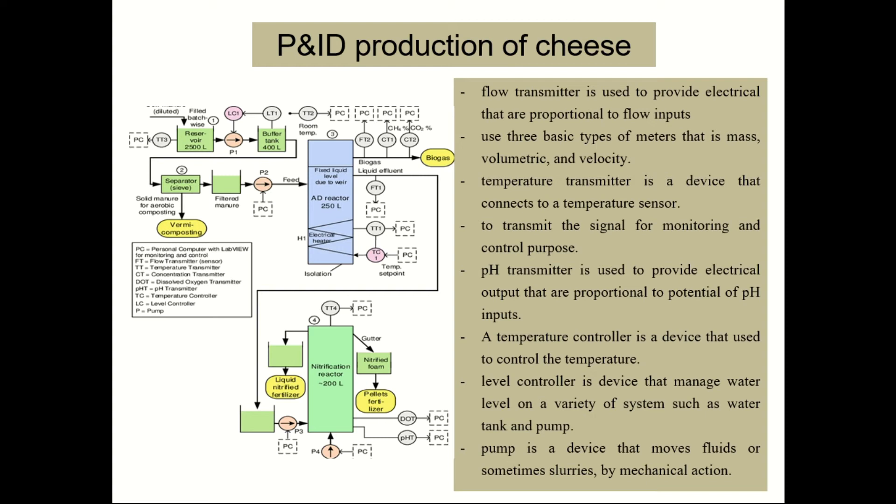Next, a temperature transmitter is a device that connects to a temperature sensor to transmit the signal for monitoring and control purposes. Usually, the temperature sensor used in cheese production is an RTD or thermocouple. A pH transmitter is used to provide electrical output proportional to the potential of pH inputs. The pH scale is used to express the acidity or alkalinity of a cheese.